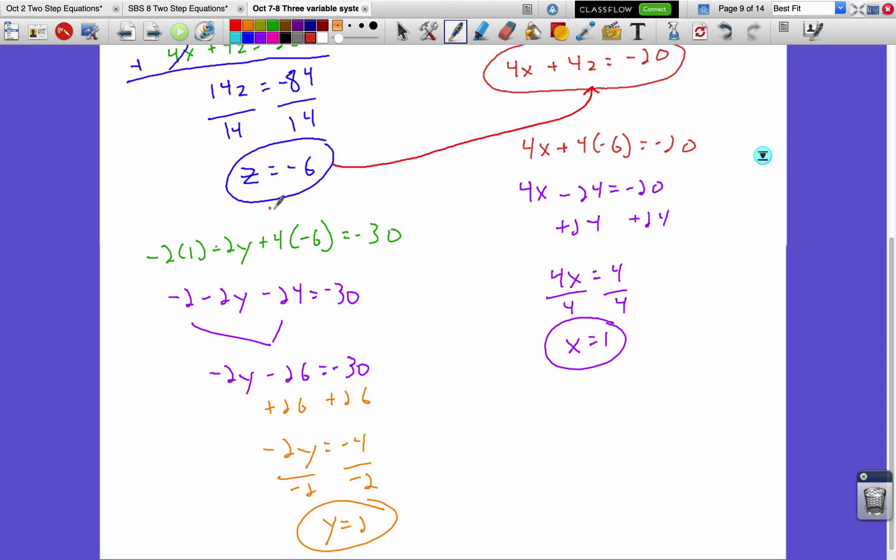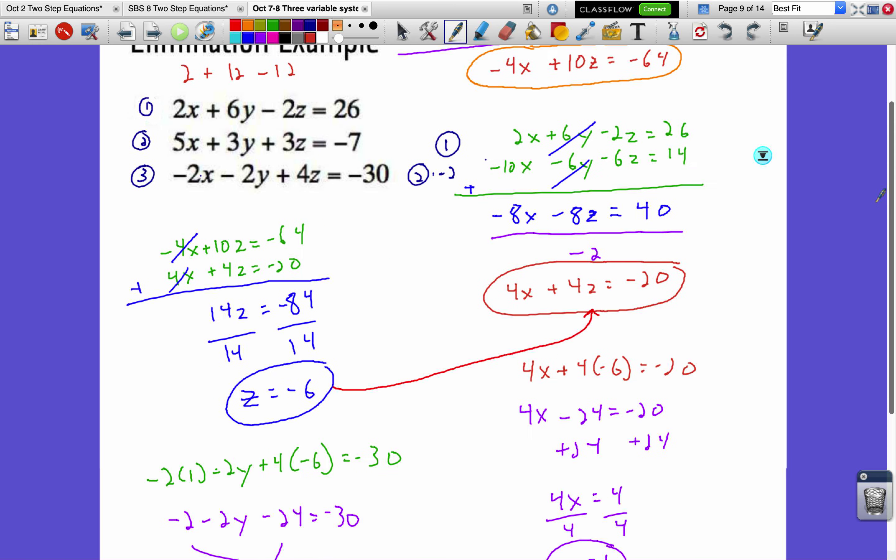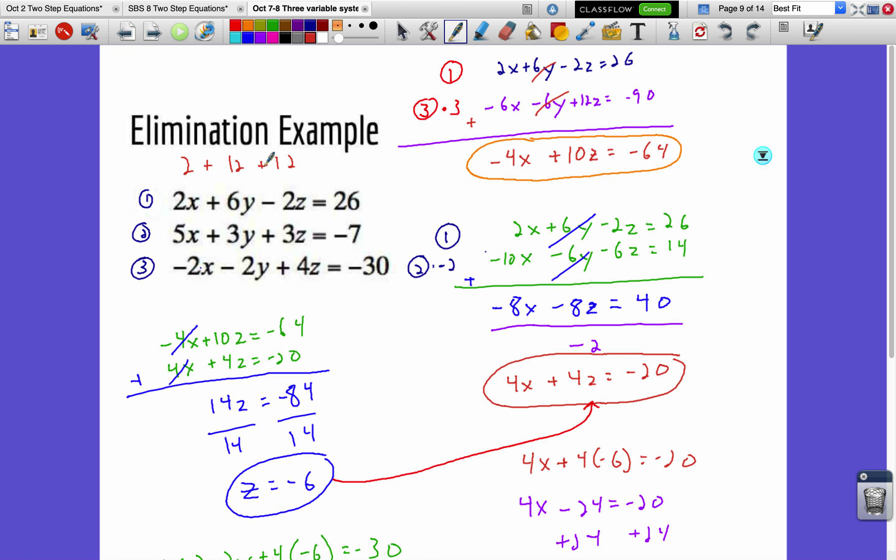Now because it was an x, y, z, or it really doesn't matter what the letters are, but you want to put this into an ordered pair alphabetically. So 1, comma, 2, comma, negative 6. All right, and let's see, we used the bottom equation to solve for y, so we'll use a different one to double check. 1, 2, negative 6. Maybe we'll check that top one, so that would become 2 plus 12 minus 12. I'm not plugging that in right. I said 1, 2, negative 6. So that would actually become a plus 12. So 2 plus 12 plus 12 equals 26. So 14 plus 12, so 26 equals 26. There's your double check.